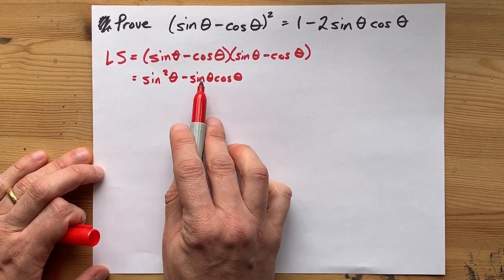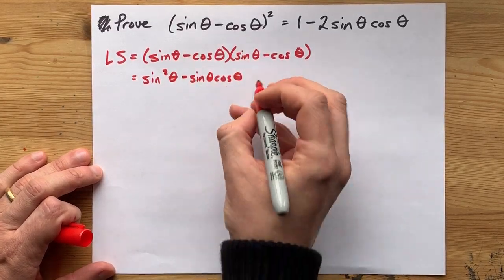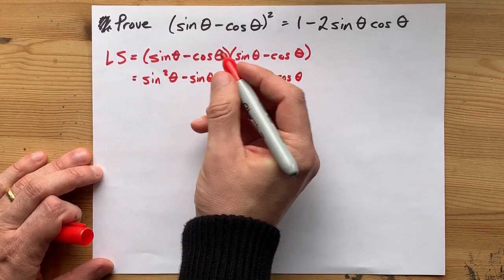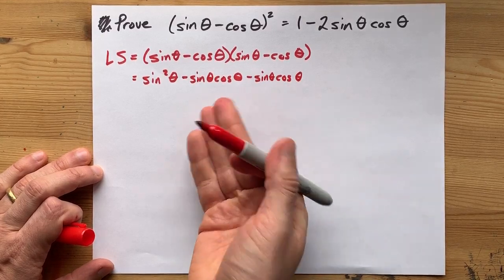I've just never seen it written the other way, I guess it's a convention. Negative cos times sine is negative sine theta cos theta. Notice, even though this was cos times sine, sine times cos is the same thing, just like four times five is the same as five times four.